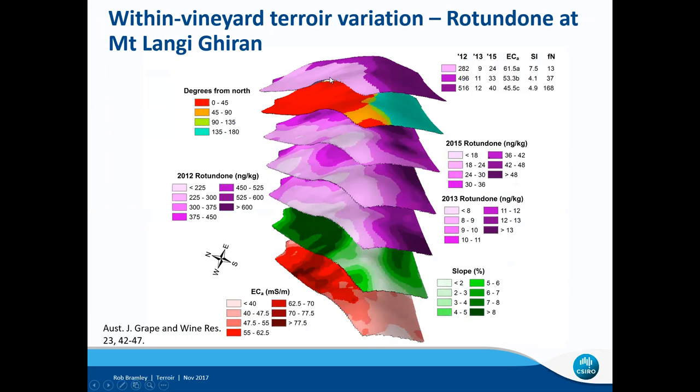With understanding of this particular aspect of terroir, there are opportunities to pursue strategies such as selective harvesting. In a low rotundone season, there's probably not much the winemaker can do to select out pepperiness. In a high rotundone year, selective harvesting followed by careful blending in the winery could allow some degree of control over the pepperiness of final wines. And in a medium rotundone year, there's a real opportunity to keep the lower and higher pepper areas separate and stream them into different products to achieve a particular preferred wine style.